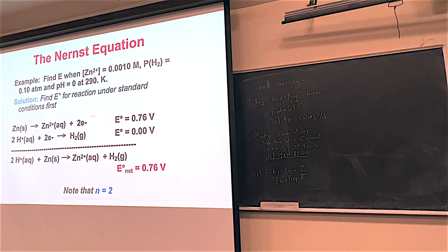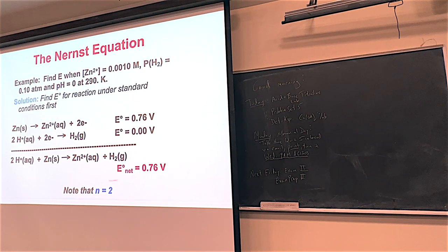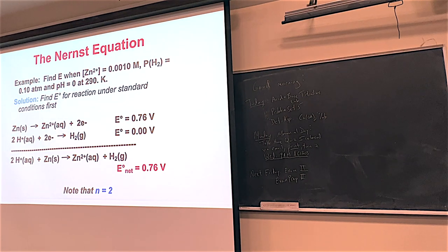In this reaction, two electrons were generated and two electrons were used up, so the n value is 2. Two electrons cancel two electrons — that's how you find n. If it had been silver going to silver+, you'd still multiply by two to make the electrons cancel. Whatever number you're canceling out when the oxidation and reduction come together, that's your n value.